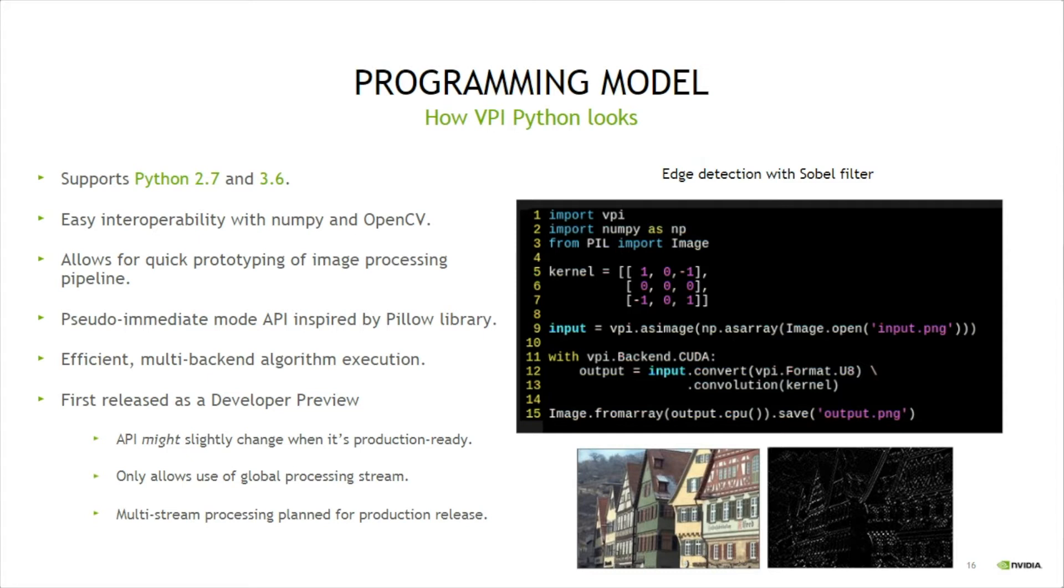As an example, the script shown here implements a simple edge detection pipeline. The input is read from disk on line 9 using Pillow and wrapped into a VPI image with the help of NumPy.